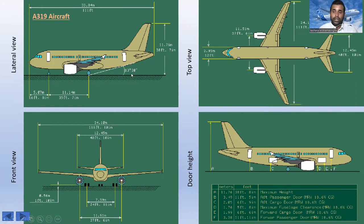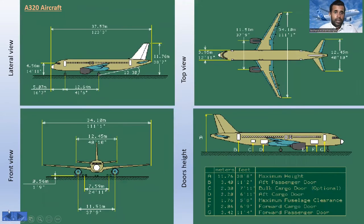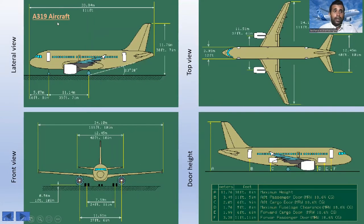The A319 is shorter than the A320 and A321. From nose to tail it is around 33.84 meters, compared to the A320's 37.57 meters — so it is a bit shorter. This is the lateral view and you can see the dimensions.